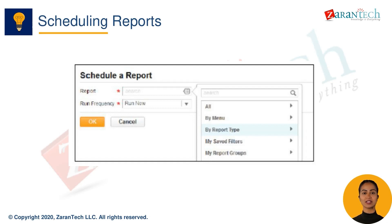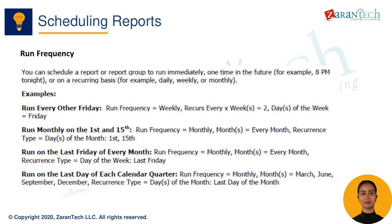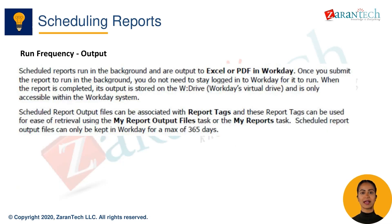To schedule a report, go to the Scheduled Report section under Reporting. Click on Create Schedule Report to open the scheduling wizard. First, search for and select the report or report group you want to schedule. Next, configure the run frequency based on your needs.